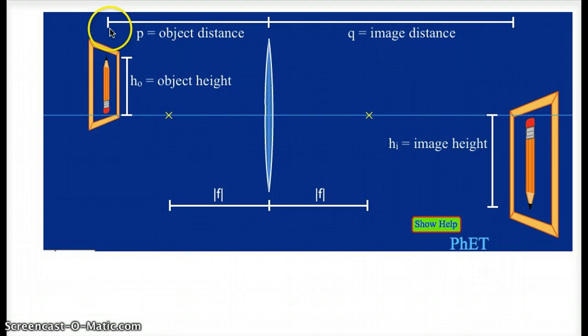Here is our object. It is an object distance, which we label p, away from the center of the lens. The image is an image distance, which we label q, away from the center of the lens.